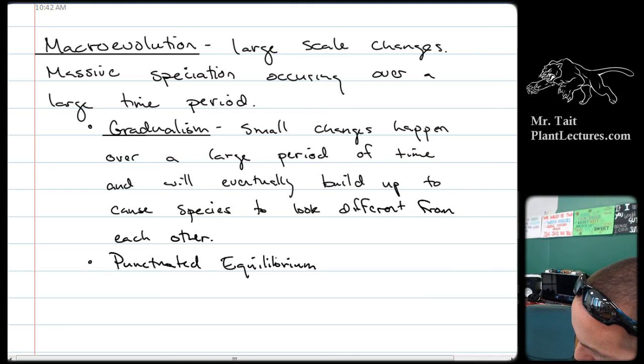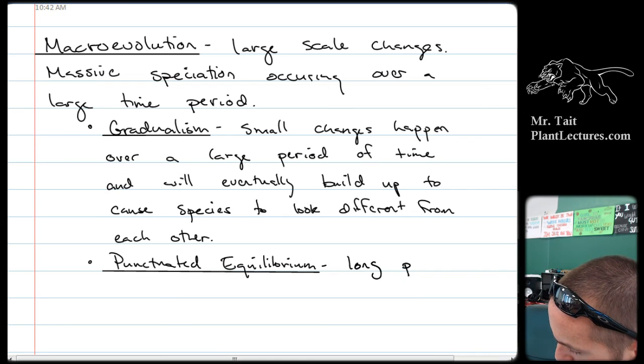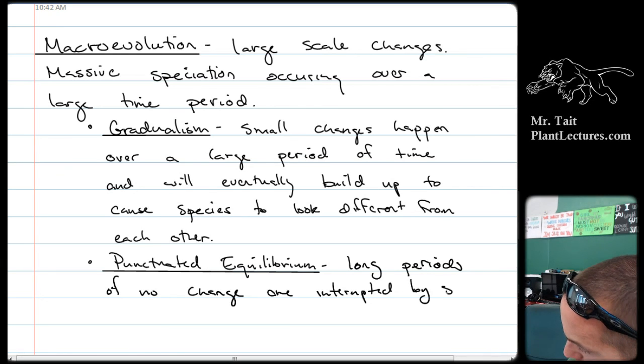This concept is called punctuated equilibrium. And punctuated equilibrium is the concept that equilibrium means no change, right? So the concept that there's no change in species for a really long period of time. And then every once in a while, there's an interrupted point, a punctuation in that equilibrium where everything just goes crazy and it starts changing really rapidly. So long periods of no change are interrupted by short periods of rapid change.